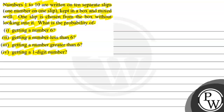So we have separate slips 1 to 10, one number written on each slip, kept in a box and mixed. We need to find: part one, getting a 6; part two, getting a number less than 6; part three, getting a number greater than 6; and part four, getting a one-digit number.